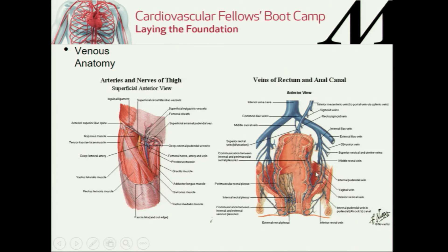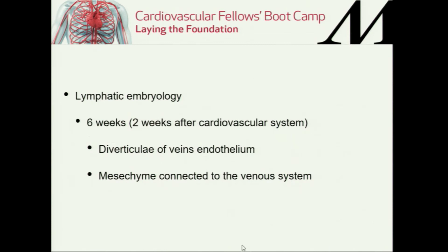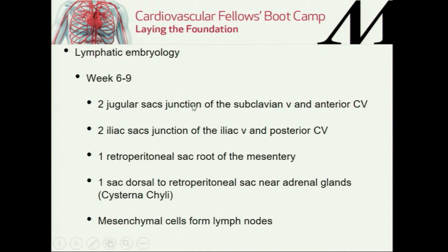Proximally, the internal iliac vein drains all the pelvis and its contents, and is the source of a lot of issues in our patients. It drains into the external iliac and forms the common iliac veins to form the vena cava. Rapidly — lymphatic embryology: at about six weeks, about two weeks after the cardiovascular system is formed, you start seeing diverticula. These sacs become evident in the embryo and develop into the lymphatic system. There are two theories about where they come from: diverticula of the endothelium in the veins, or mesenchyme connected to the venous system — either way, they are closely related to the venous system, which is one reason we are trying to put the venolymphatic concept together.